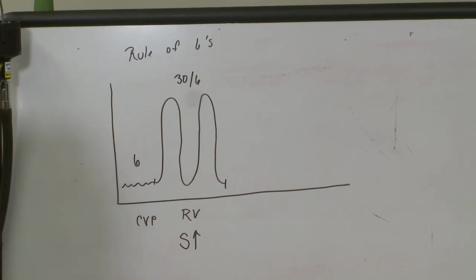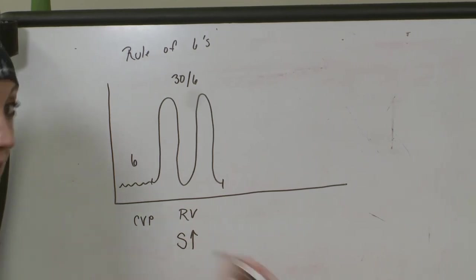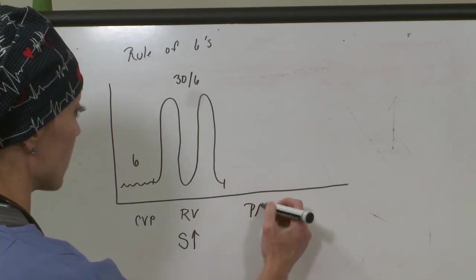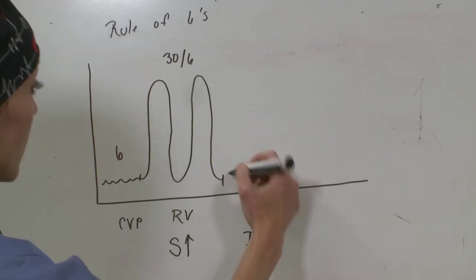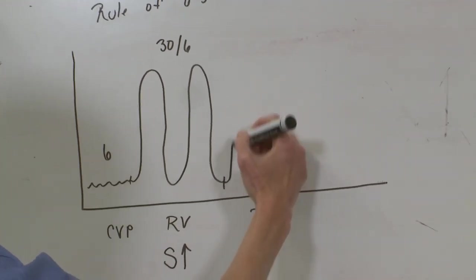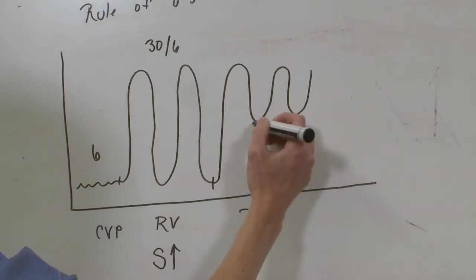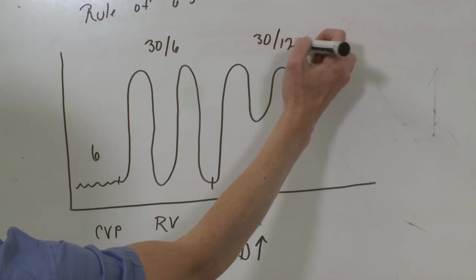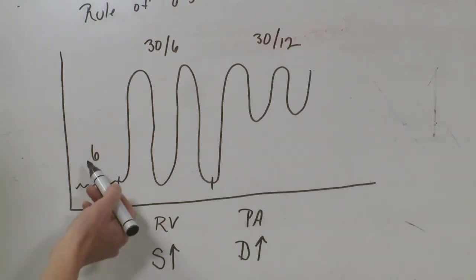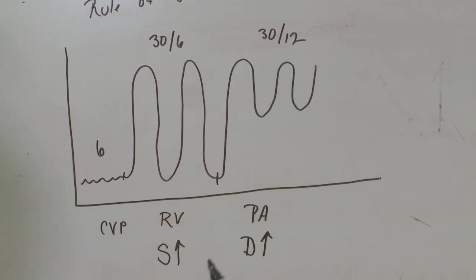Next, you're going to keep continuing the swan, cross the pulmonic valve, enter the PA. And once you enter the PA, that's when you get the diastolic step up. So here, then that's the diastolic step up, right there. Now, your number has jumped up to 30 over 12. So there's the systolic jump up when you're in the RV to 30, cross into the PA, and you get that diastolic jump.